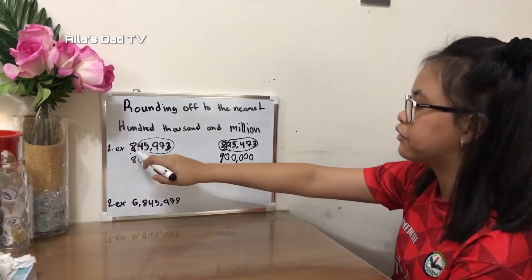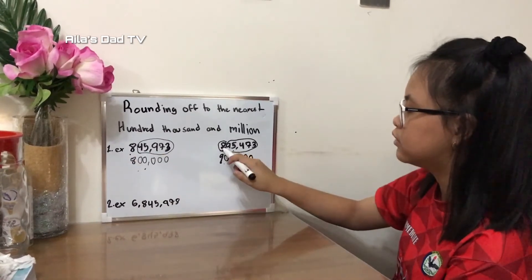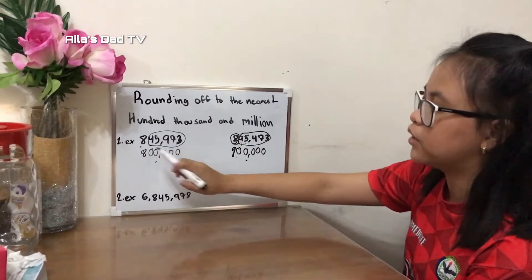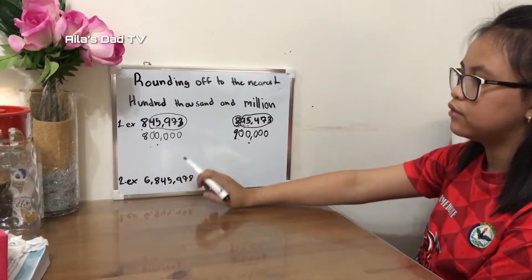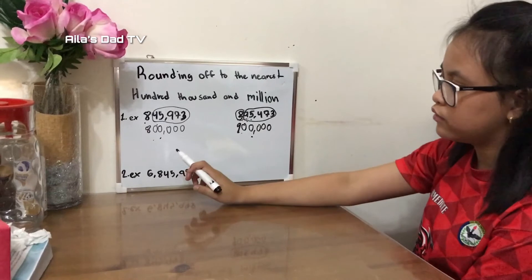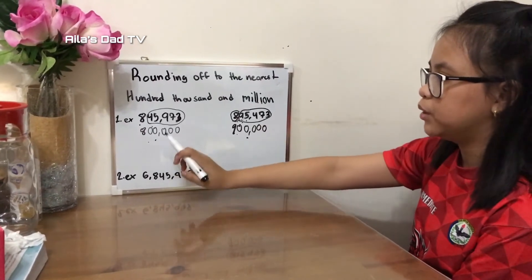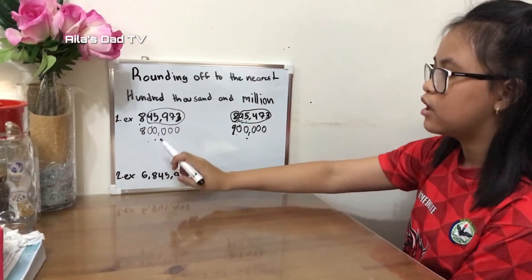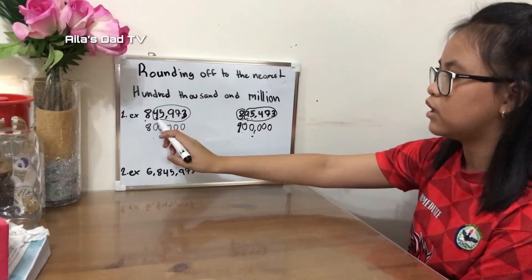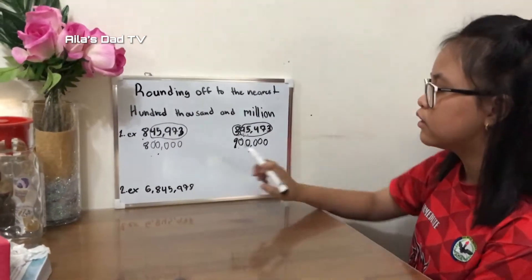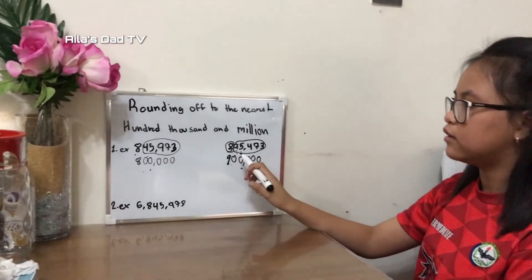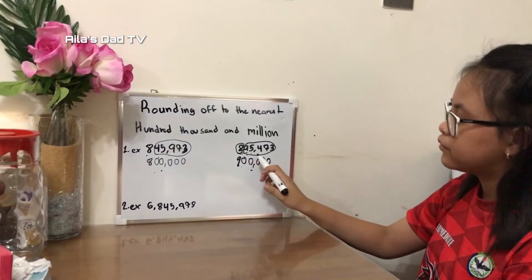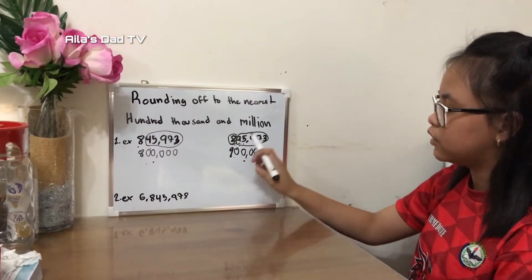Even though we rounded off from the same digit eight, the answers are different. This happened because in the first example the number on the right was less than five, so nothing happened to the digit being rounded — and the rest of the numbers became zero. But in the second example, since the number on the right was greater than five, we added one to the digit being rounded and made the rest of the numbers zero.